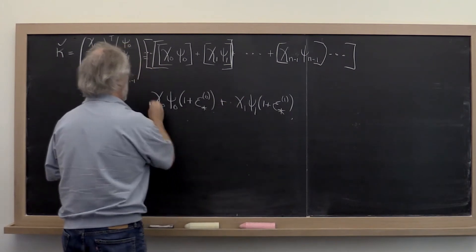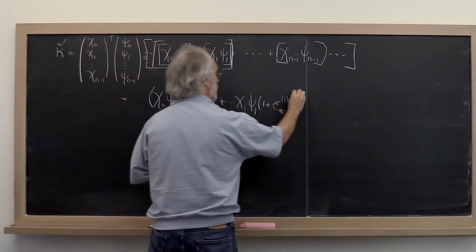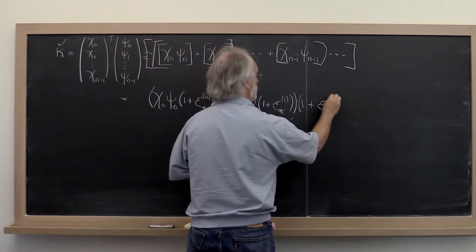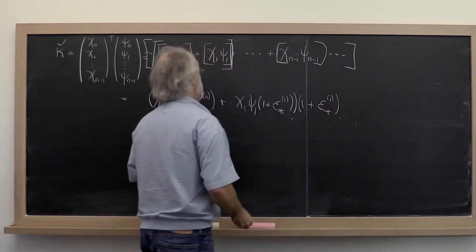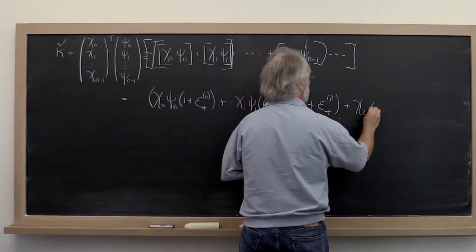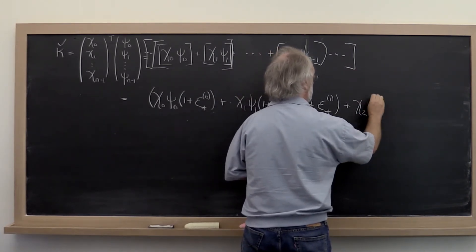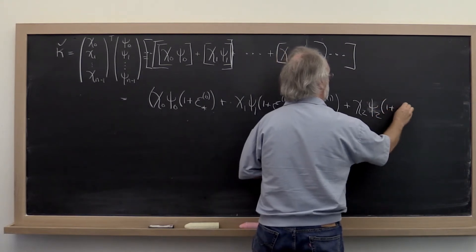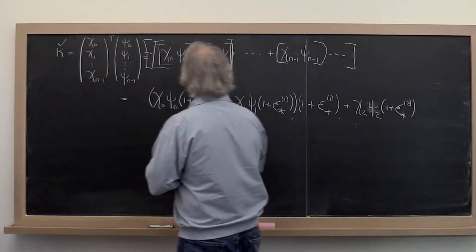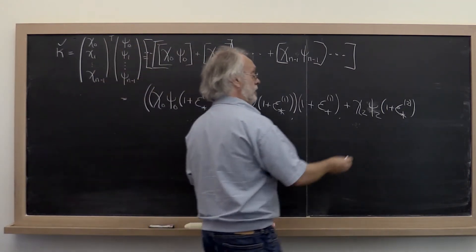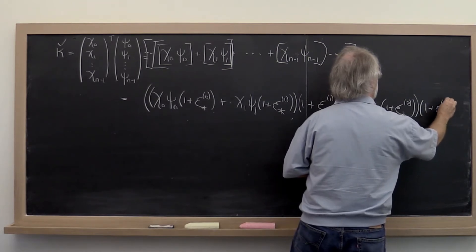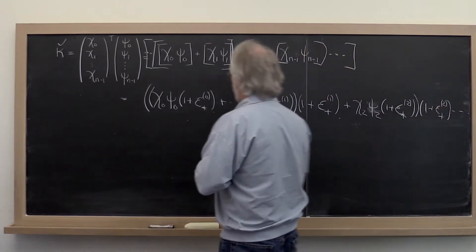When we do this addition, we incur an error. When we do the next multiplication, we incur an error. When we perform this addition, we incur an error, and so forth.